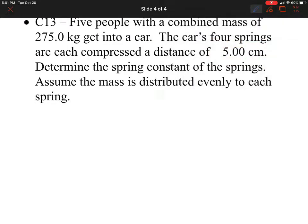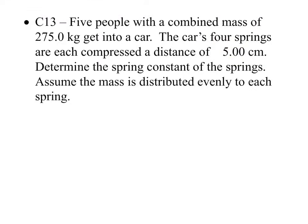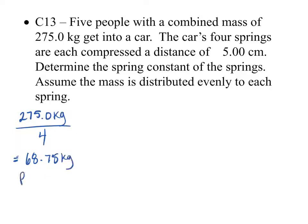Let's do one more example using this equation. Five people with a combined mass of 275 kilograms get into a car. The car's four springs are compressed a distance of five centimeters. Determine the spring constant of the springs, assuming the mass is distributed evenly to each spring. That means all 275 kilograms are distributed evenly across four springs, so we need to divide by four to figure out how much mass each spring has exerting on it — that's 68.75 kilograms per spring.